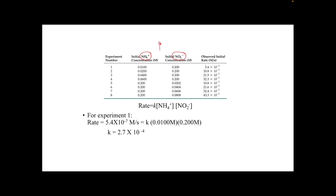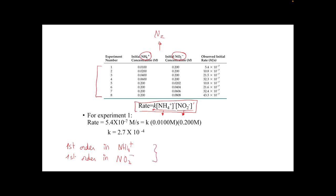We are still talking about the reaction of ammonium ions and nitrite ions producing nitrogen gas. Using the table from the previous lecture, we calculate the rate constant. The rate law is: rate equals the rate constant multiplied by the molar concentration of ammonium raised to power 1, multiplied by the molar concentration of nitrite raised to power 1. This reaction is first order in ammonium, first order in nitrite, and second order overall.